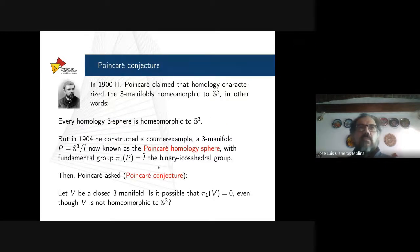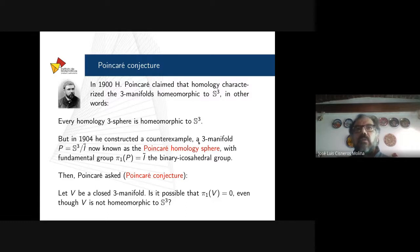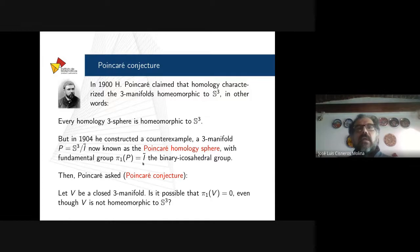This is the famous Poincaré conjecture. In 1900, Poincaré claimed that homology characterized the three-manifolds homeomorphic to the three-dimensional sphere — in other words, every homology 3-sphere is homeomorphic to the standard 3-sphere. But four years later, Poincaré himself constructed a counterexample: a three-manifold which is the quotient of the standard three-dimensional sphere by a finite subgroup called the binary icosahedral group. This three-manifold is called the Poincaré homology sphere because it has the homology of the three-sphere, but its fundamental group is this finite group called the binary icosahedral group.